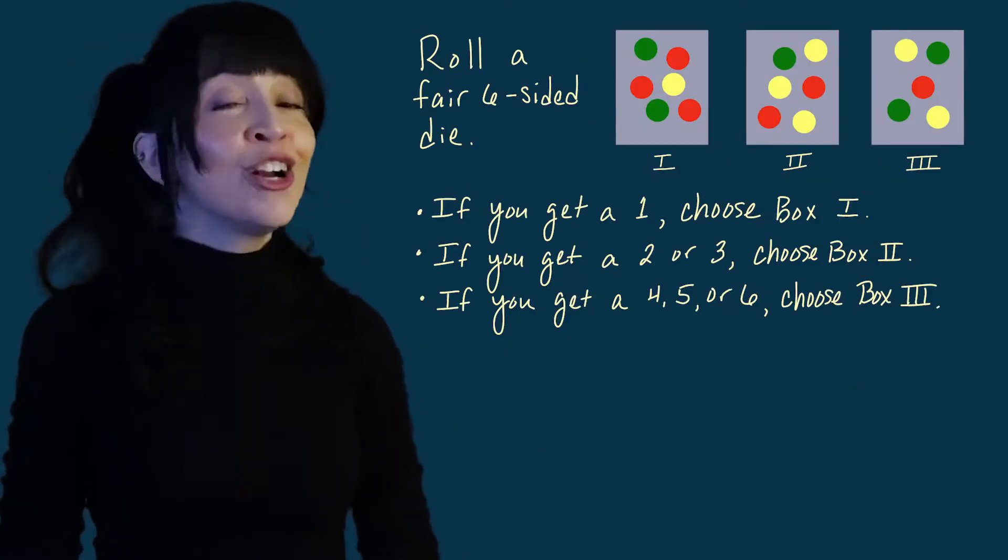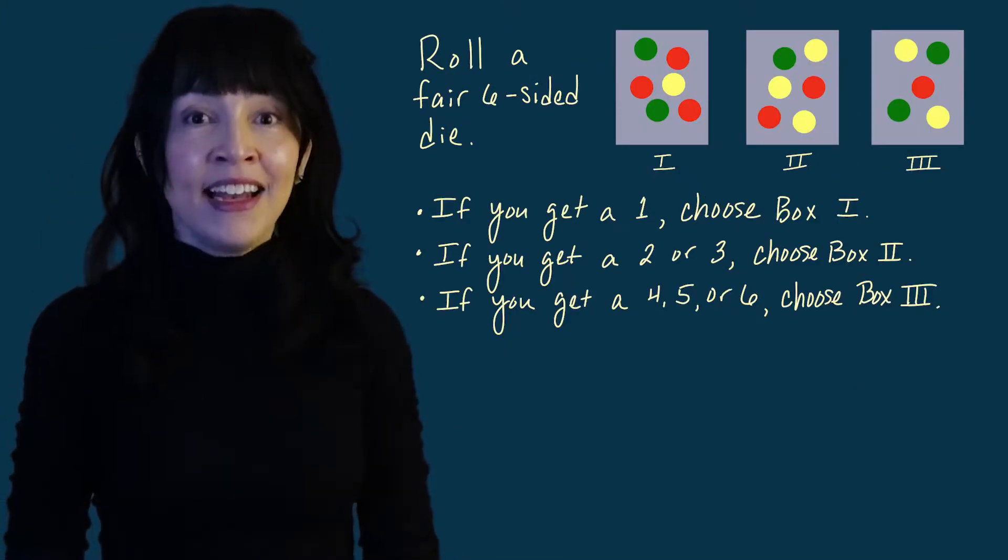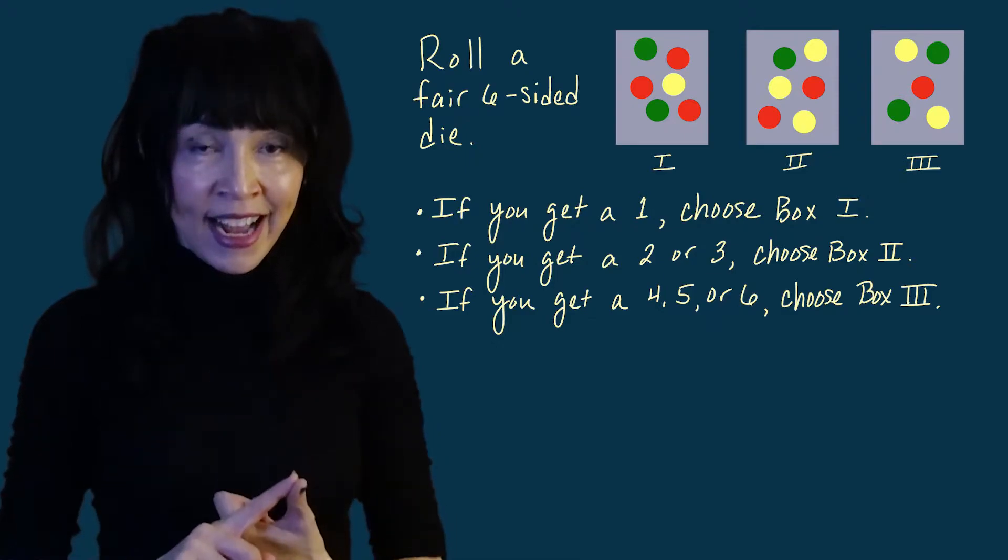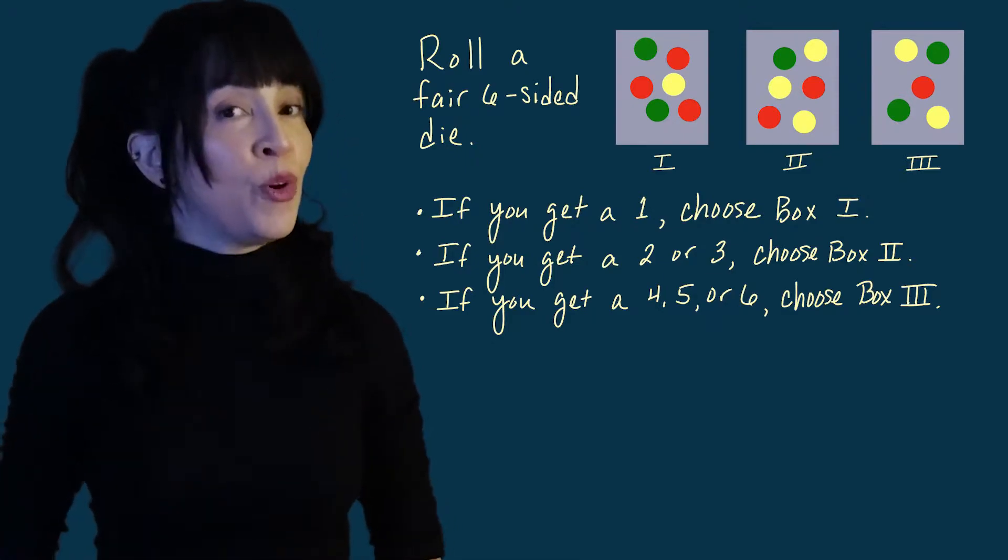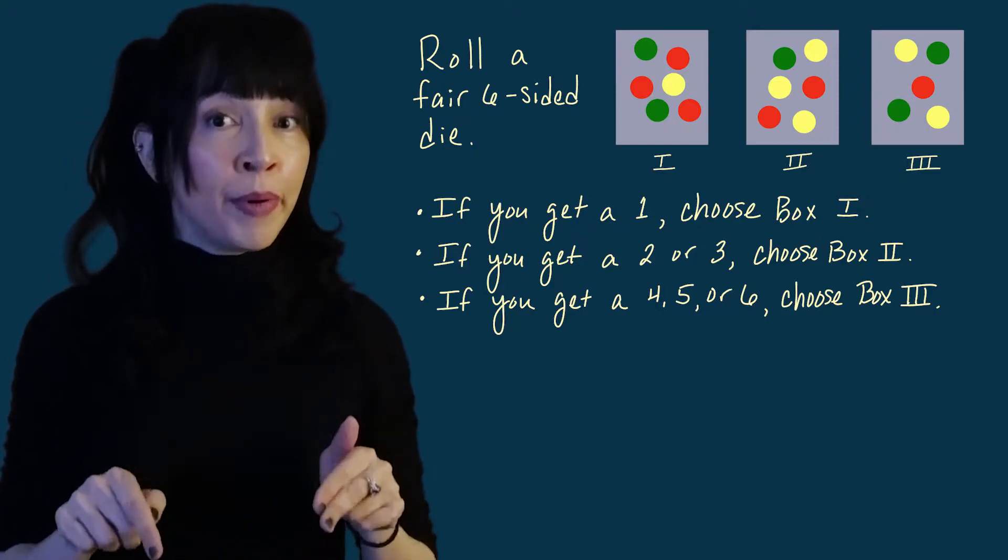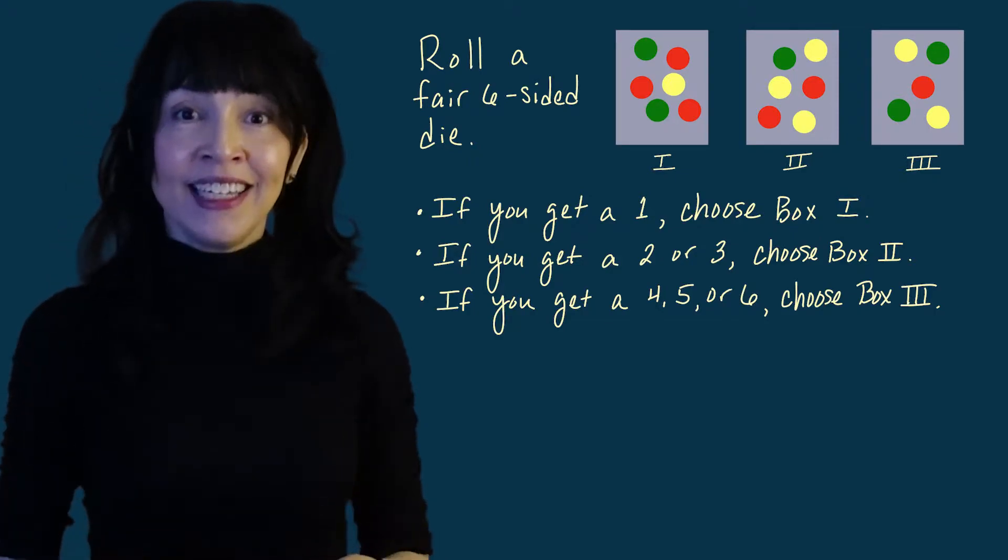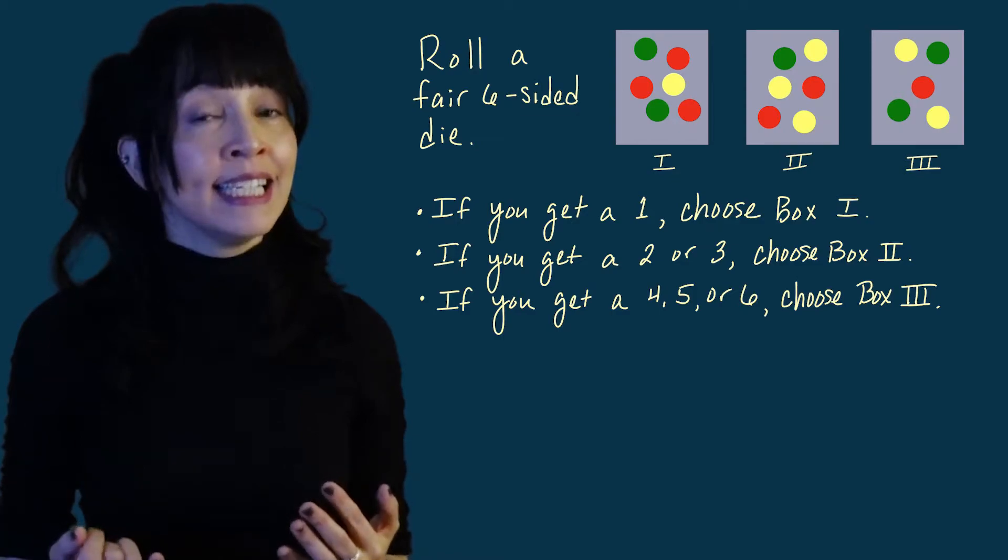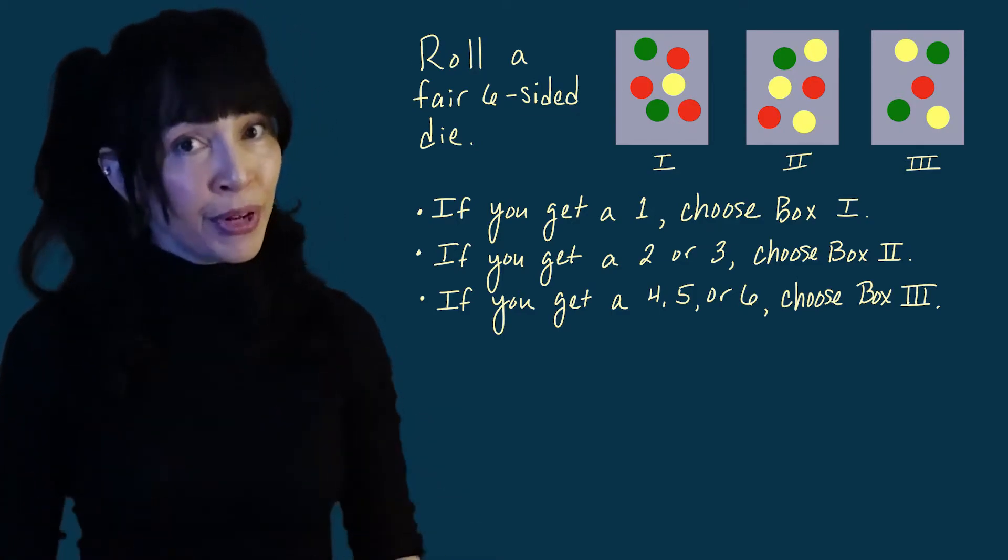But I want to kick this up a notch and make this problem just a little more challenging. So I'm going to roll a fair six-sided die. And if I get a one on the die, I'm going to select box one. And if I get a two or a three, I'm going to select box two. And finally, if I get a four or five or six, I'm going to select box three.